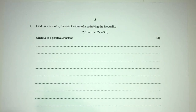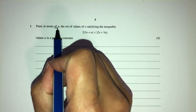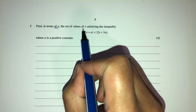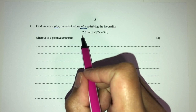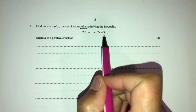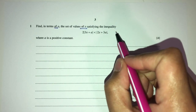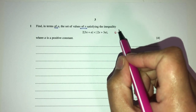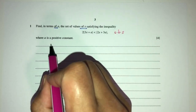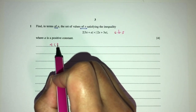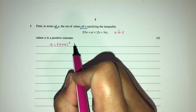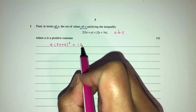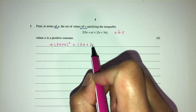Here we have to find, in terms of a, the set of values of x satisfying this equation. We have modulus on both sides and x on both sides. In this case we just square both sides. We will have four, and that will become 3x plus a squared less than 2x plus 3a squared.